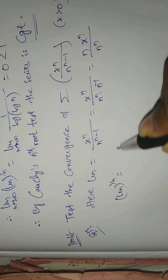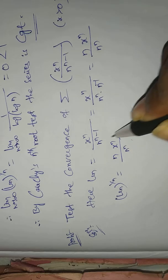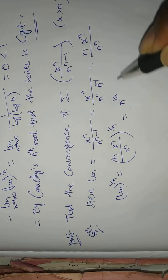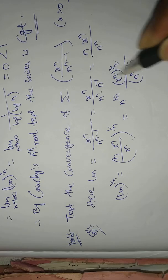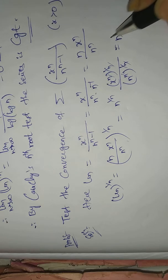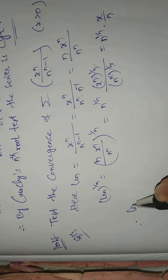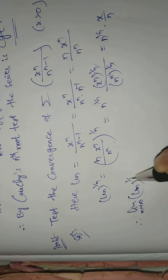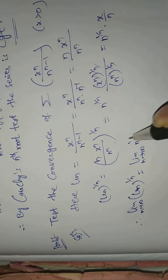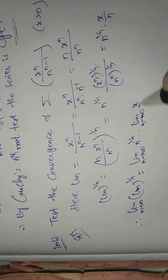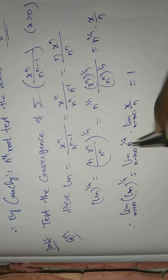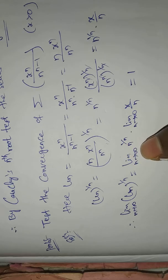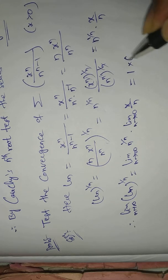Now, u_n^(1/n) equals [n times x^n by n^n]^(1/n). Simplifying: the n terms cancel, giving u_n^(1/n) equals n^(1/n) times x by n. Therefore, limit as n tends to infinity of u_n^(1/n) equals limit n^(1/n) times limit x/n. Since limit of n^(1/n) = 1 and limit of x/n = 0, the result is 1 times 0 = 0, which is less than 1.